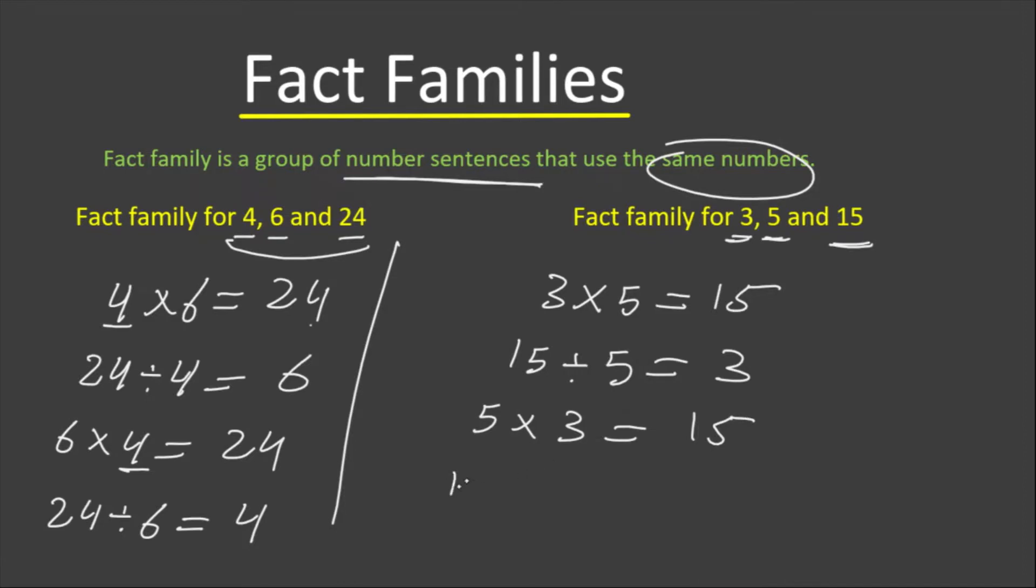And at the same time, if we divide 15 by the other factor, let's divide in this case by 3, we will get the factor which is multiplied. So we will get 5.